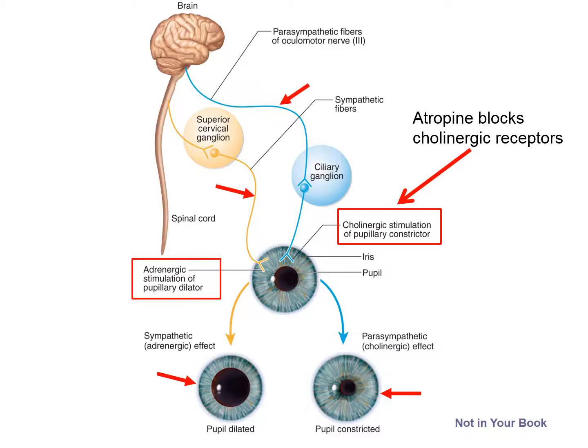Here we have a situation where the sympathetic and parasympathetic subsystems have antagonistic effects because they innervate and stimulate two totally different cells, which have two totally different effects on the organ.